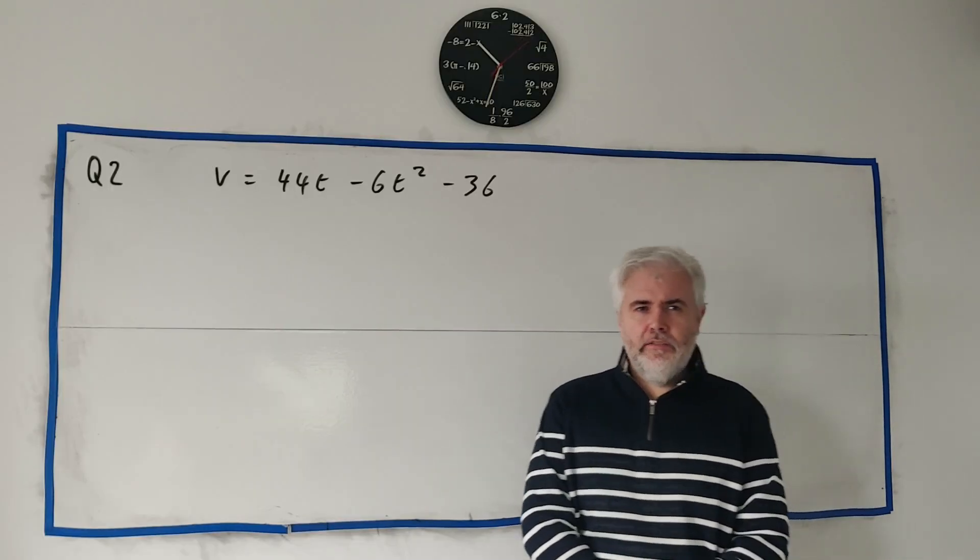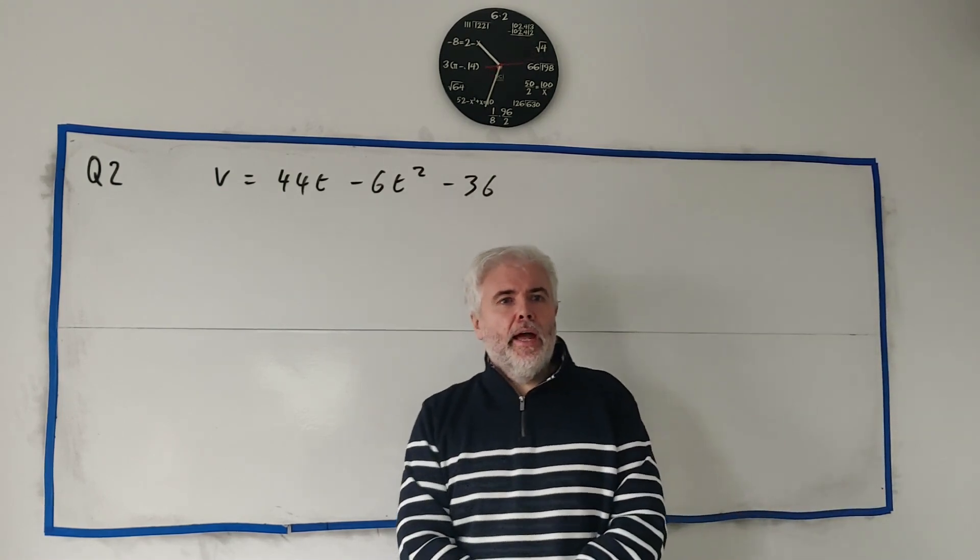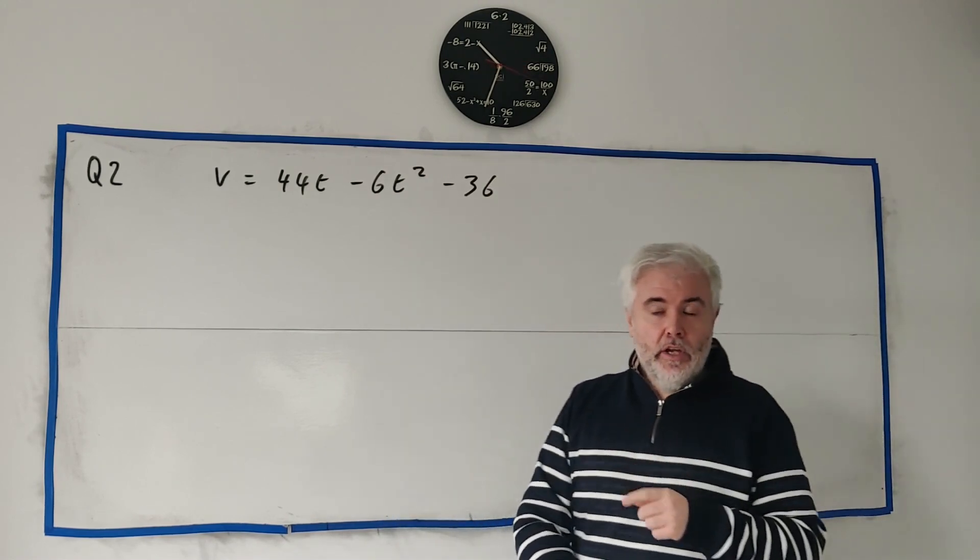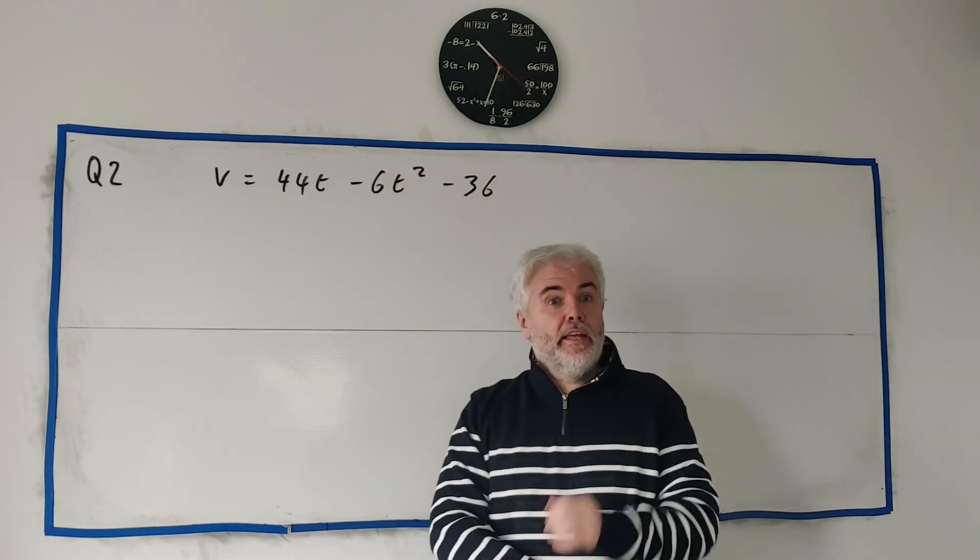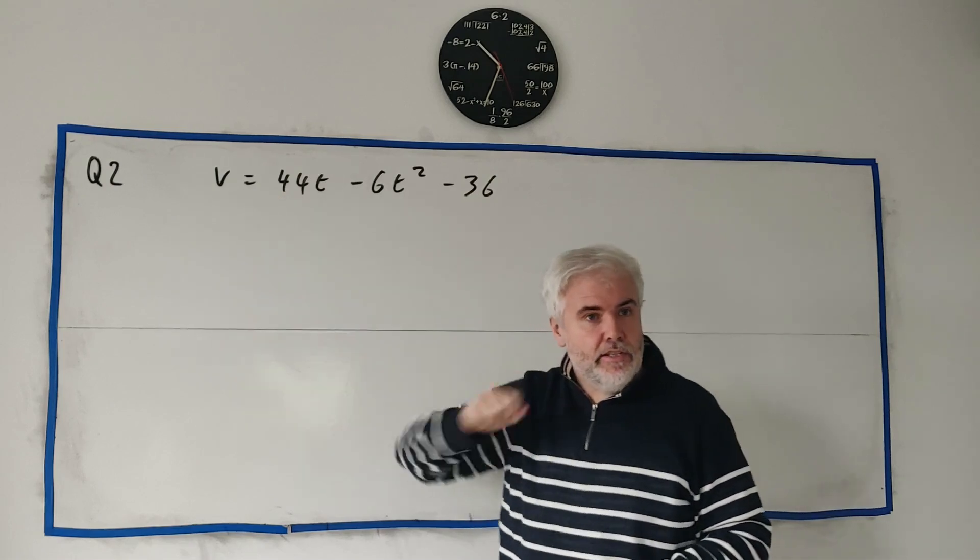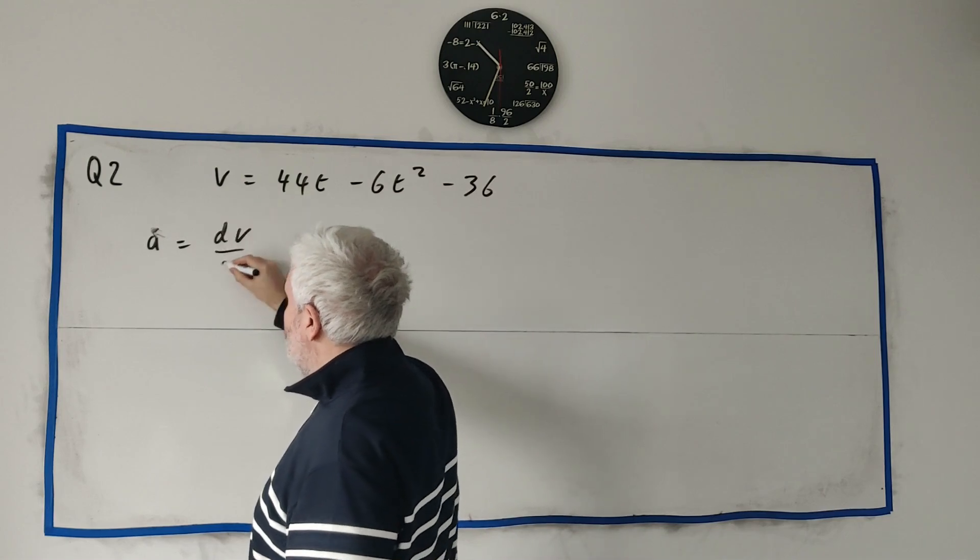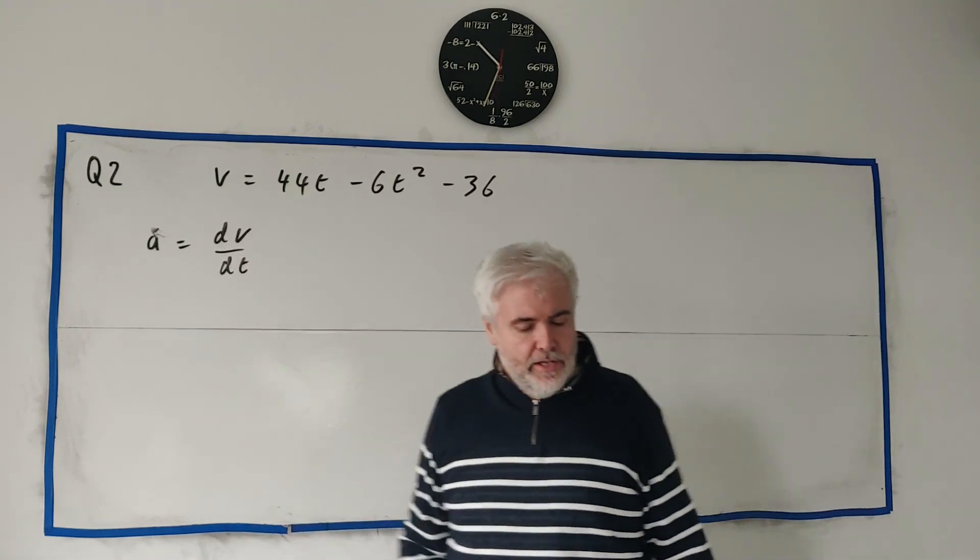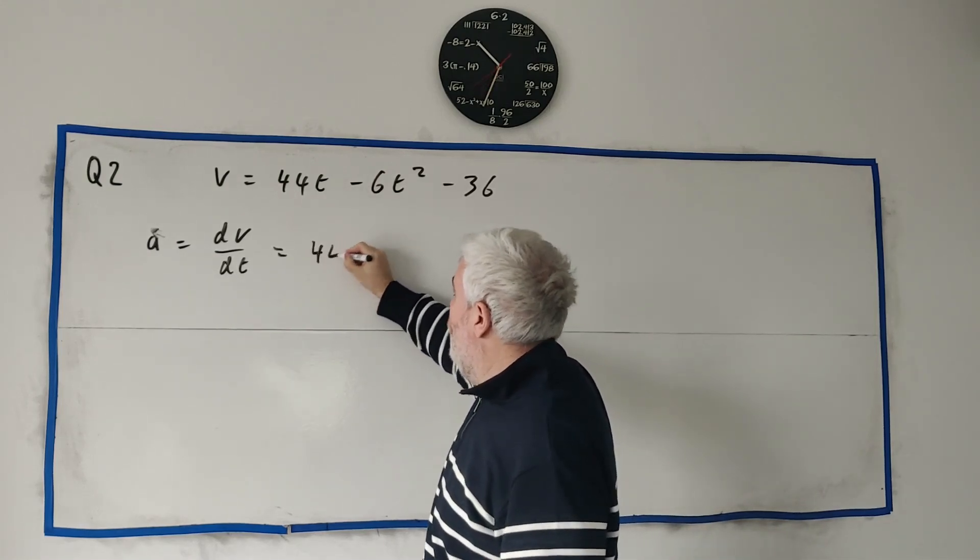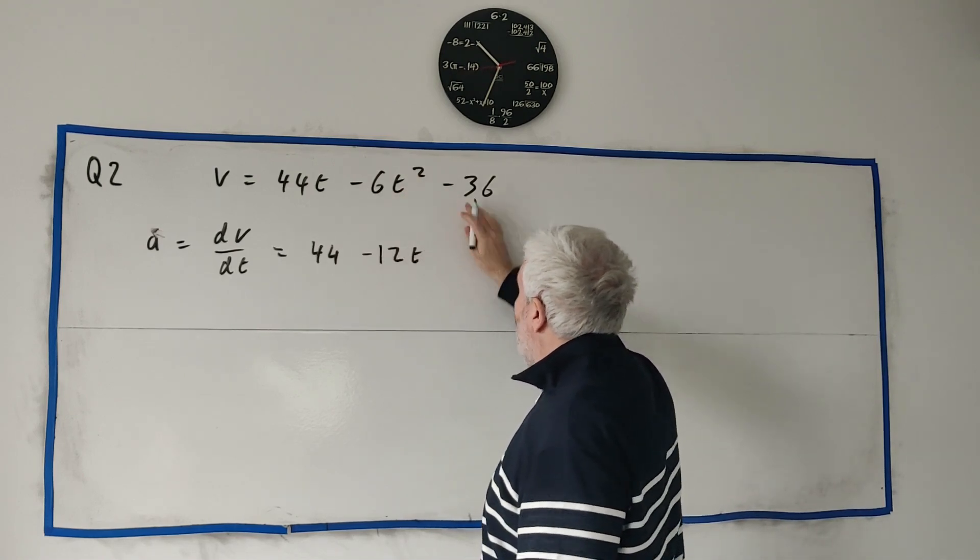In question two, they give us an equation for v, this quadratic equation here. And they ask us to find a set of values for which the acceleration of the particle that's described by this equation is positive. Now, hopefully you see acceleration, they give you velocity, you remember that acceleration is equal to the derivative of velocity with respect to time. So we can find acceleration. Acceleration is equal to the derivative of this, that's 44 minus 2 times 6, minus 12t, and that goes to 0.